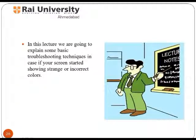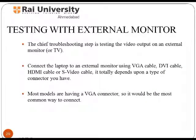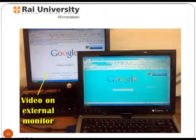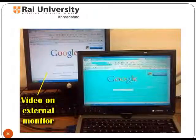You will learn basic troubleshooting techniques in case your screen started showing strange or incorrect colors. Here, testing of the video output on an external monitor is observed. Connect the laptop to an external monitor using a VGA cable, DVI cable, HDMI cable, or S-Video cable depending upon the type of connector you have. You can see the difference between two laptop screens, one of which is showing strange colors.